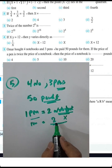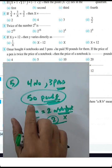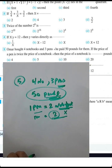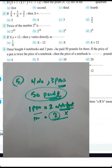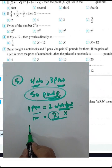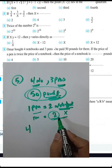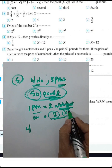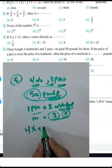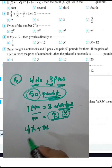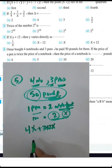He paid 50 pounds total. For four notebooks and three pens: 4 times x plus 3 times 2x equals 50. So 4x + 6x = 50.